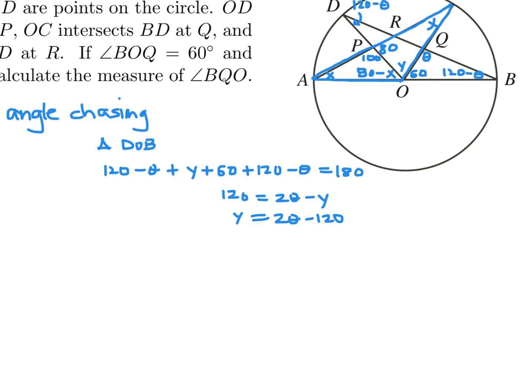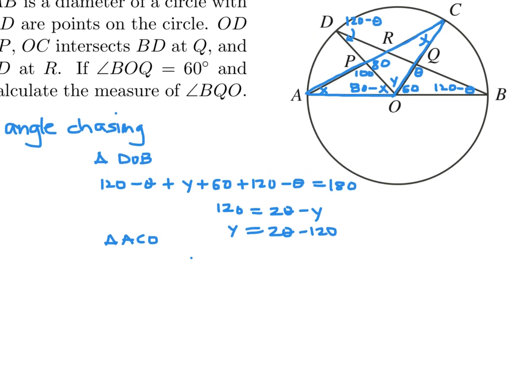Let's move this up. So what's the next triangle? Probably ACO, triangle ACO. In that one, you have 2X plus 80 minus X plus Y, and all that is 180. So when you do that, you get X plus Y is equal to 100.